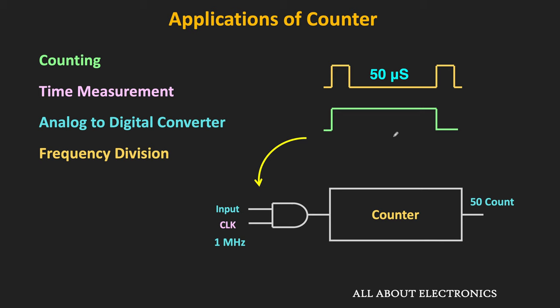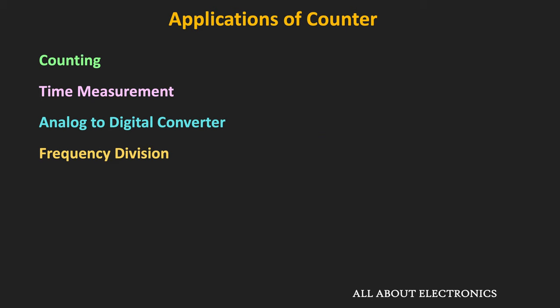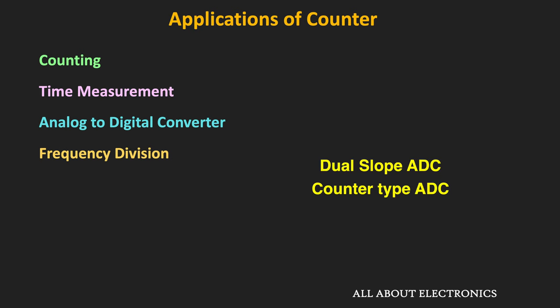In this way, the counter can also be used for measurement of time delay. Similarly, these counters are also a very essential part of many analog-to-digital converters — for example, they are an integral part of dual-slope as well as counter-type ADCs. These are just a few applications of the counter.